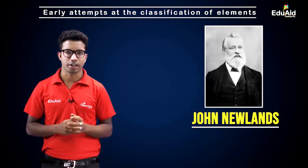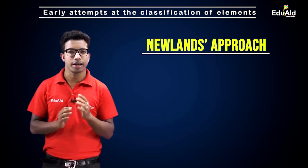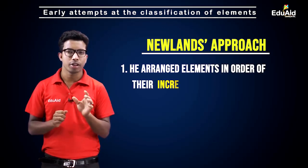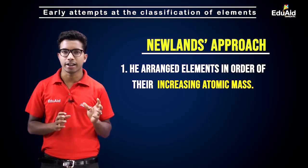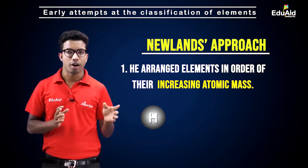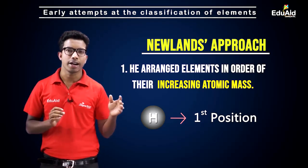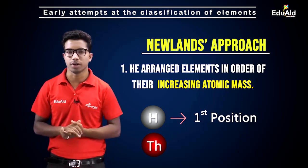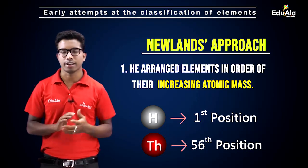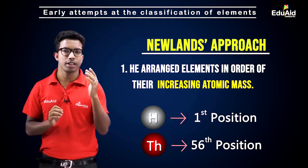After Döbereiner, the next significant attempt at classifying elements was made by John Newlands, who was from England. In 1866, he arranged all known elements in order of their increasing atomic mass — hydrogen was placed first as the lightest element, and then elements with progressively higher atomic masses were placed, with thorium in the 56th position, as only 56 elements were known at that time.